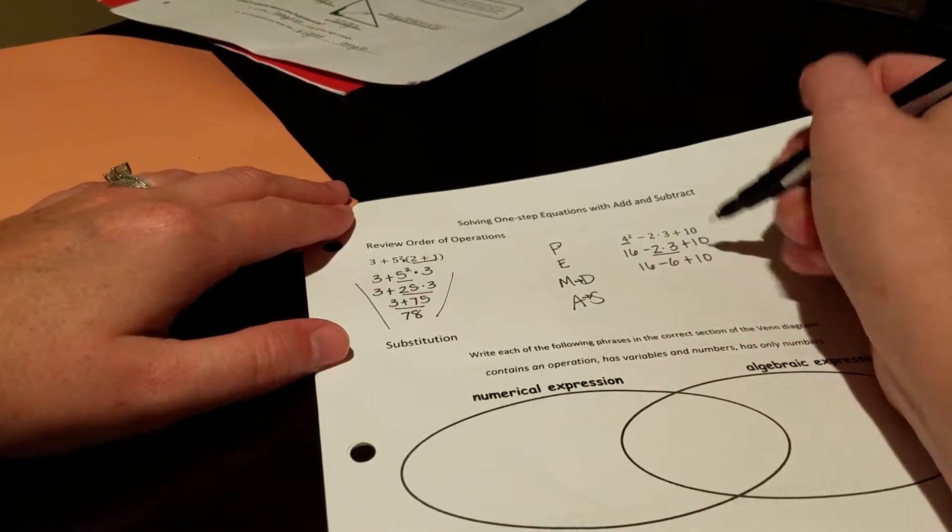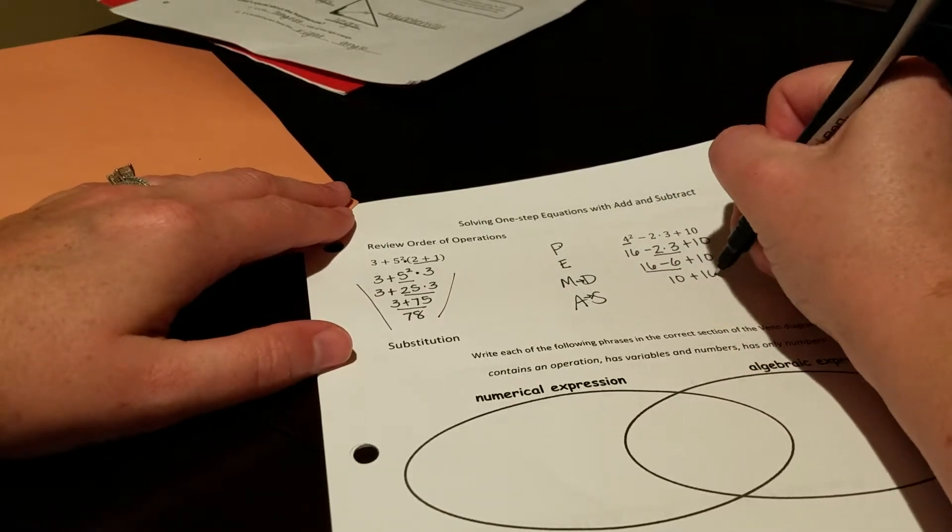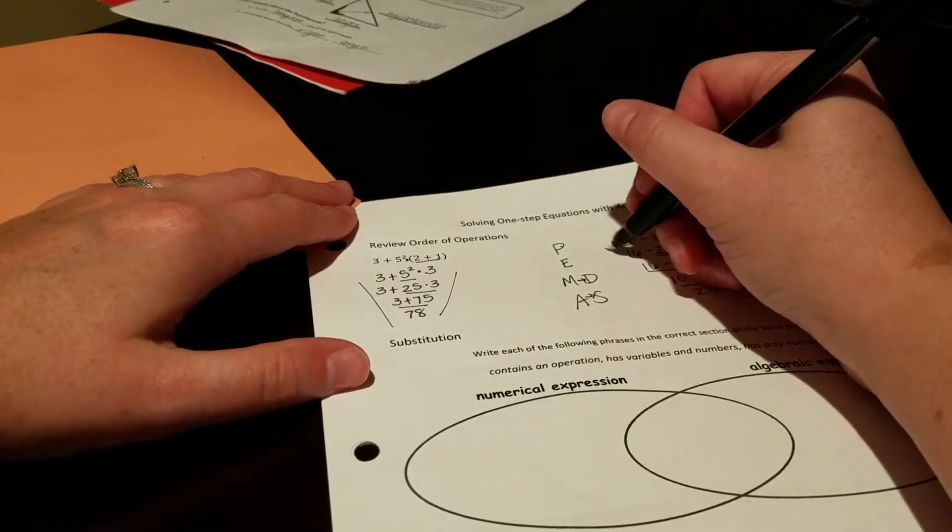And we're left with add and subtract, so we work from left to right. 16 minus 6 is 10, plus 10, which gives us a final answer of 20.